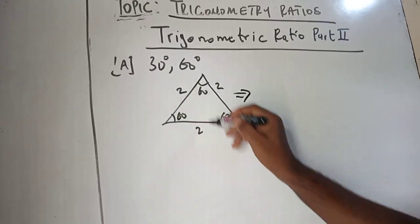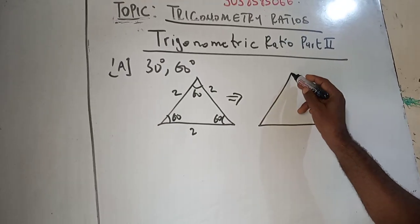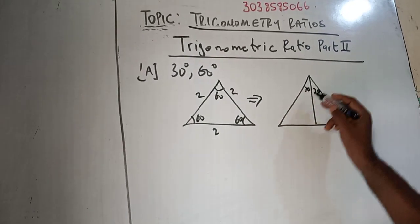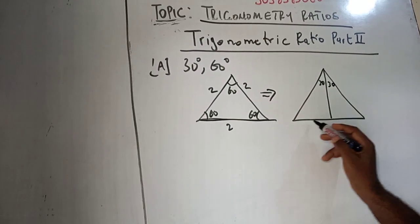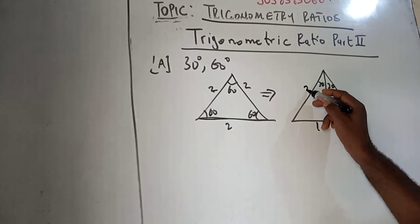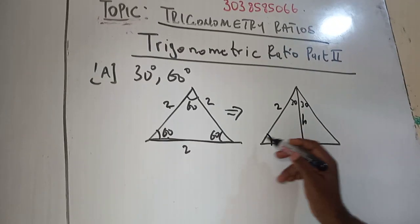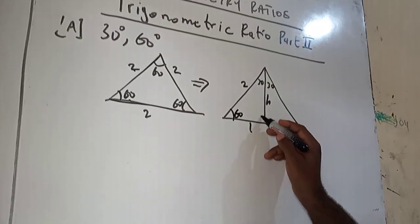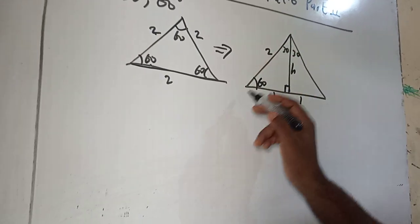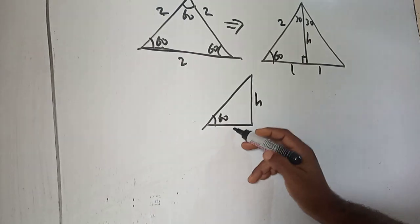The next step is to divide this triangle into 2 equal parts, like I'm doing here. If I divide this into 2 equal parts, the angle 60 will be divided into 30 and 30. And this side 2 will be divided into 1 and 1. So this side 2 that I have here remains as it is, but the height here is unknown. The angle here which is 60 degree still remains as 60, and the angle here is 90 degree. If I take this portion of the triangle out, I'm going to have this triangle in this format here — with 60, H, 1, and 2.